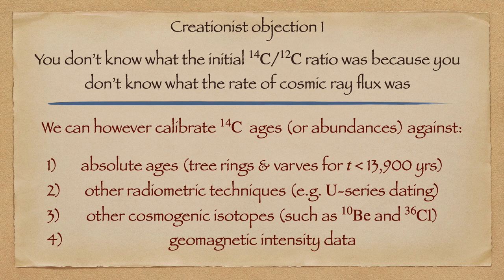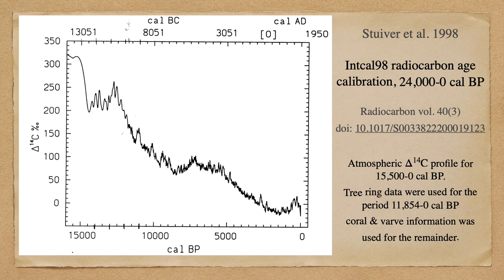What uninformed objections do young Earth creationists raise against radiocarbon dating? First, they claim we don't know what the carbon-14 to carbon-12 ratio was at the time the organism was alive because we don't know what the cosmic ray production rate was. This might be a problem in some alternate universe where we didn't have tree ring data, other forms of absolute dating, uranium series dating, other cosmogenic isotopes to reconstruct cosmic ray fluxes, or the ability to reconstruct the paleo-intensity of Earth's magnetic field. But in this universe, we can do all of these things. We have tree ring data and uranium-thorium data from corals, and we can use these to identify and correct for fluctuations in carbon-14 productivity.